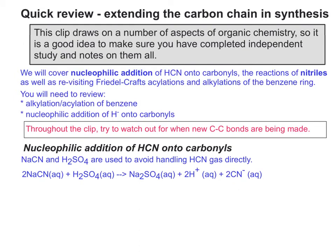What chemists do to get around this problem is use sodium cyanide and sulfuric acid. Because HCN is a gas, that makes it extremely dangerous. Although this alternative is slightly safer, we still have the CN⁻ ion, which we have to be quite careful of.